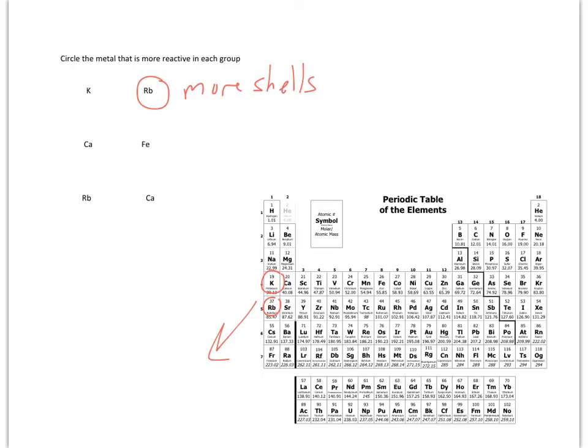Between calcium and iron, so we have calcium here, iron here, calcium's further to the left, and the reason is it has fewer protons holding those electrons in, so the electrons can escape more easily.